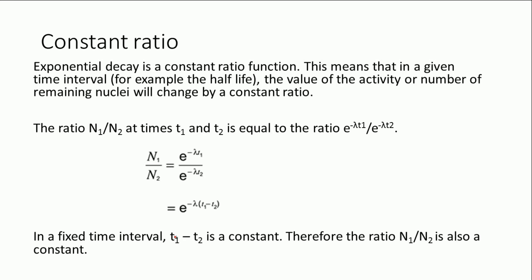Let's go into a bit more detail about why, when you halve the activity, the time stays the same no matter what the starting point. This is one of the properties of exponentials and exponential decay generally — it's what we call a constant ratio function. That means in a given time interval — for example, the half-life, or any time interval delta t — the value of the activity or the number of remaining nuclei will change by a constant ratio.